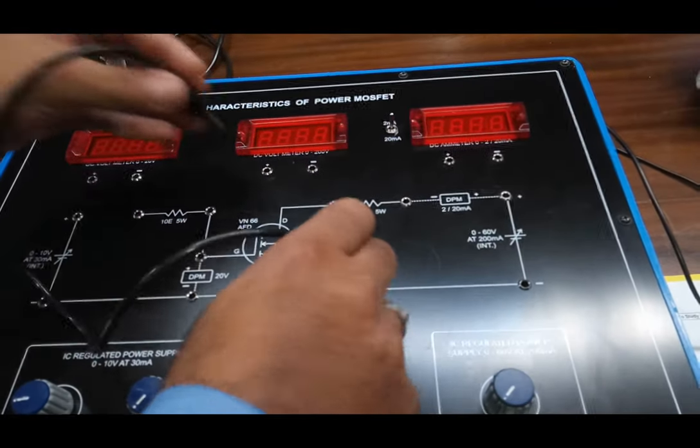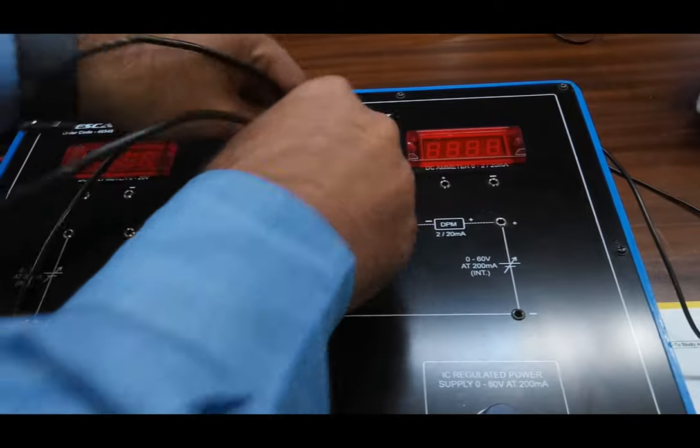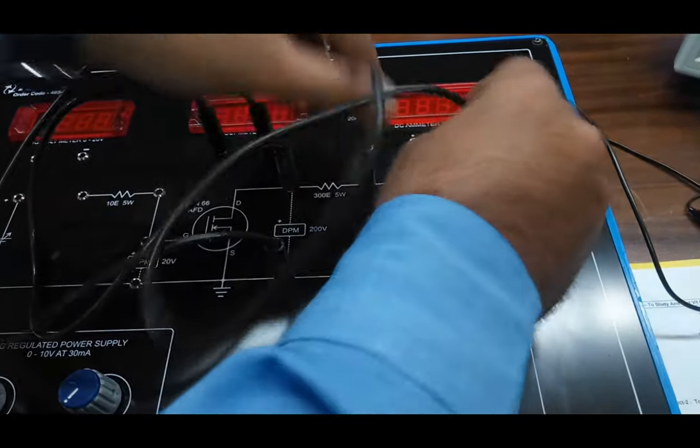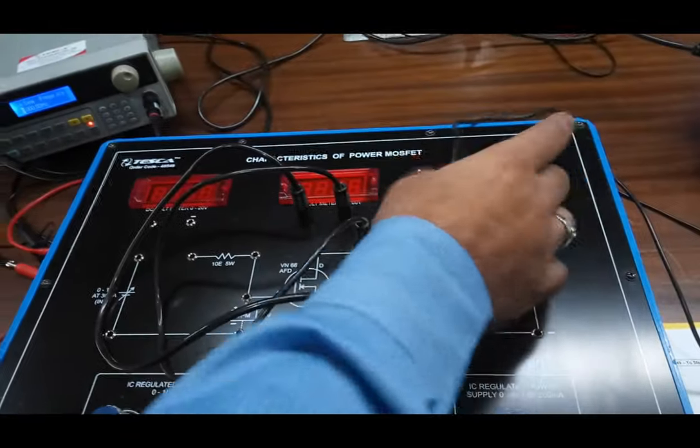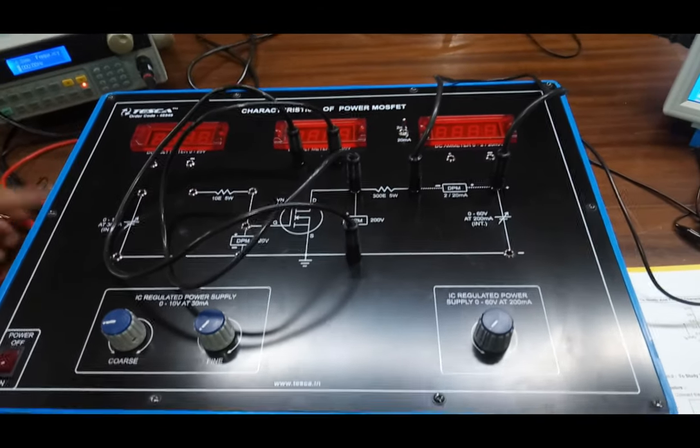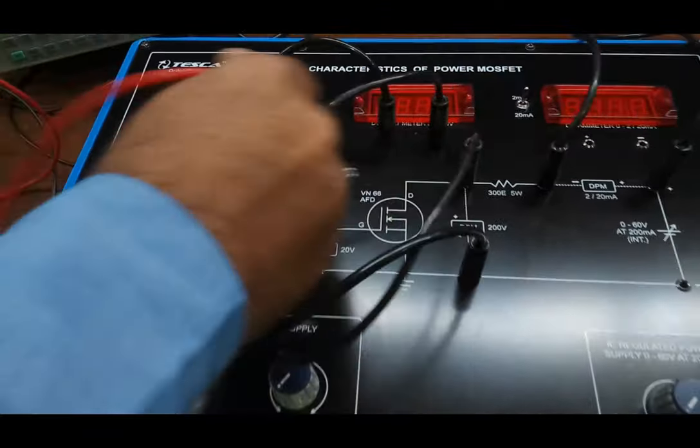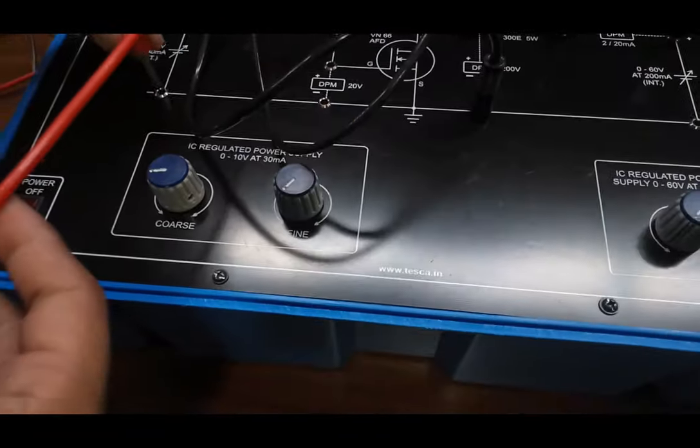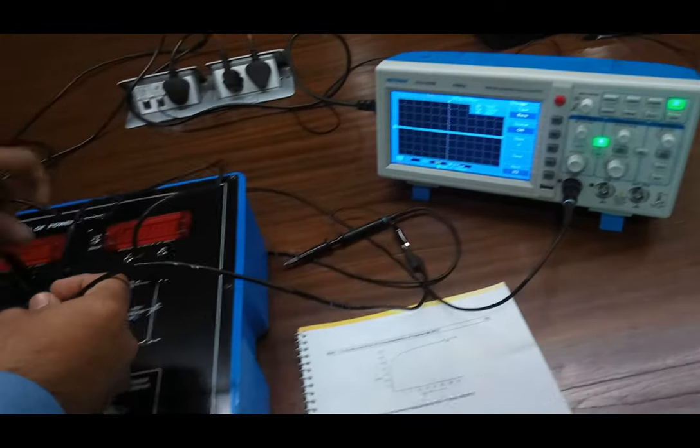First, we connect the voltmeter around drain and source terminals and short-circuit the current ammeter. We are not required in this experiment. And now connect the function generator positive to the resistance and negative to the ground terminal. Also, connect CRO across the drain source terminals.